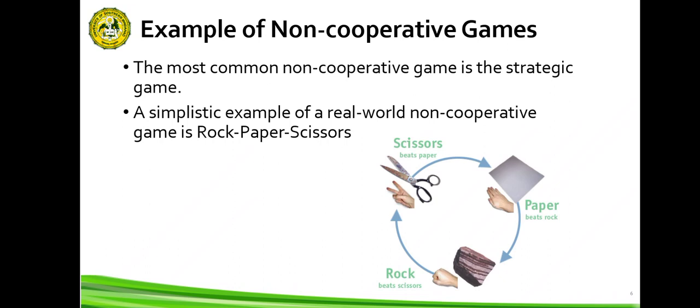Next is the example of non-cooperative games. Non-cooperative game theory deals with how rational economic agents interact to achieve their own goals. The most common non-cooperative game is the strategic game, in which only the available strategies and the outcomes resulting from a combination of choices are listed. A simplistic example of a real-world non-cooperative game is rock-paper-scissors.